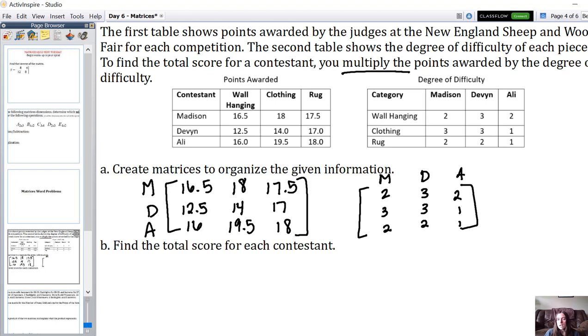So what that looks like, we're going to take Madison's row times Madison's column, Devon's row by Devon's column, and Allie's row by Allie's column. Those are the only things that we're going to be multiplying. So for Madison, we have 16.5 times 2 plus 18 times 3 plus 17.5 times 2. I'm just going to set these up for now and then we'll calculate at the end.